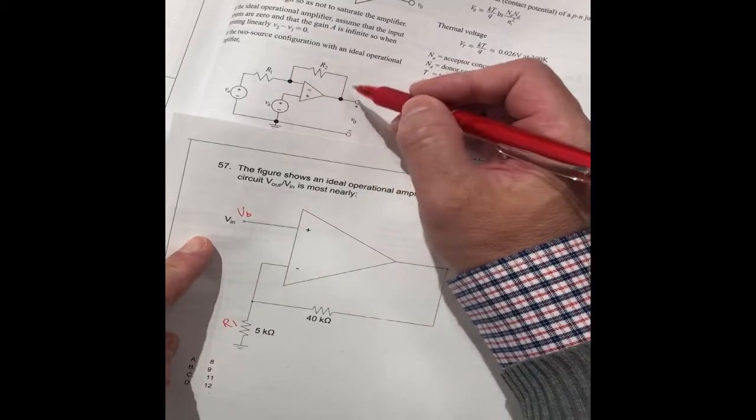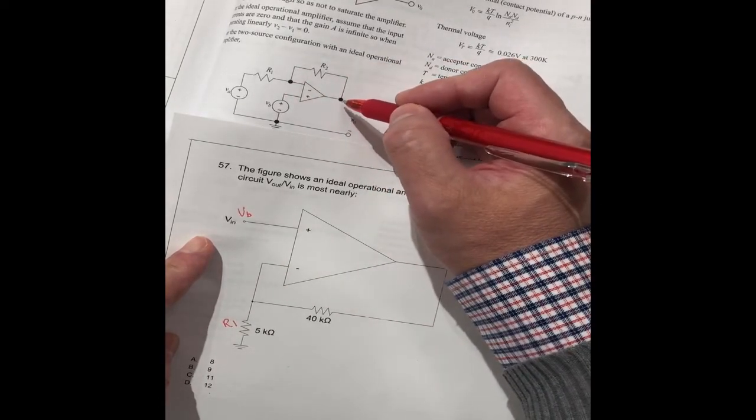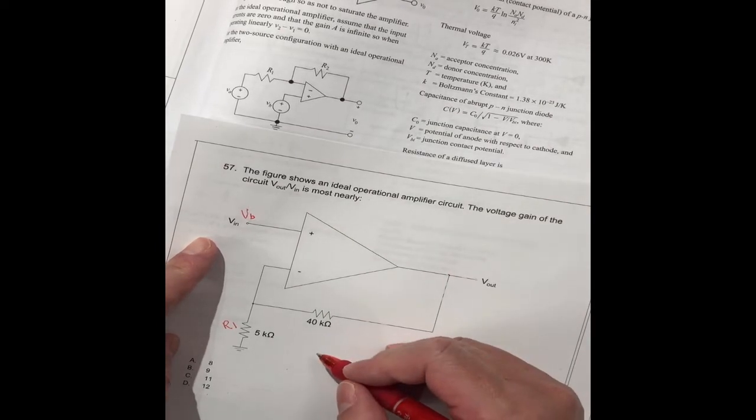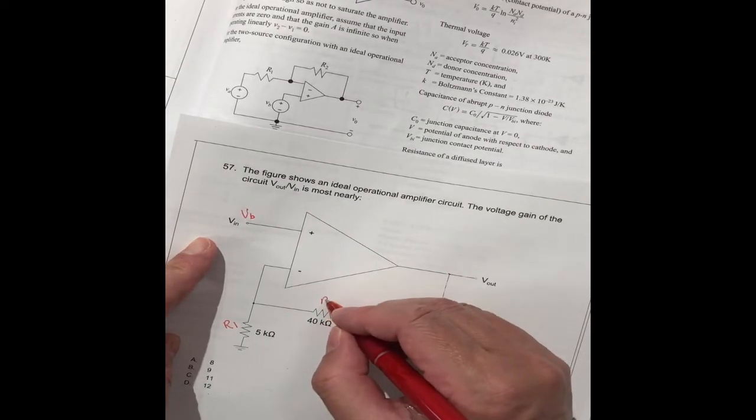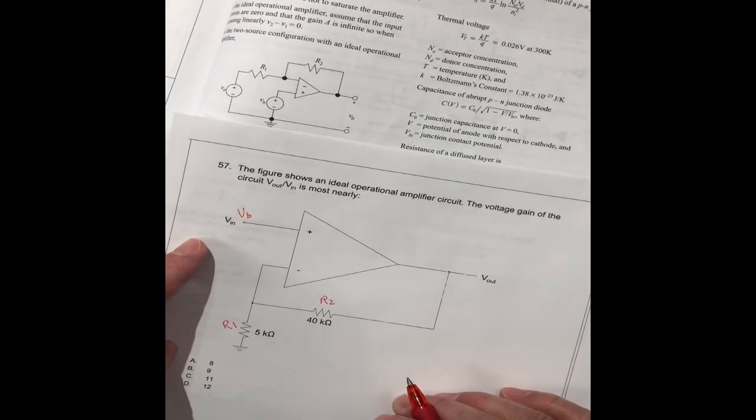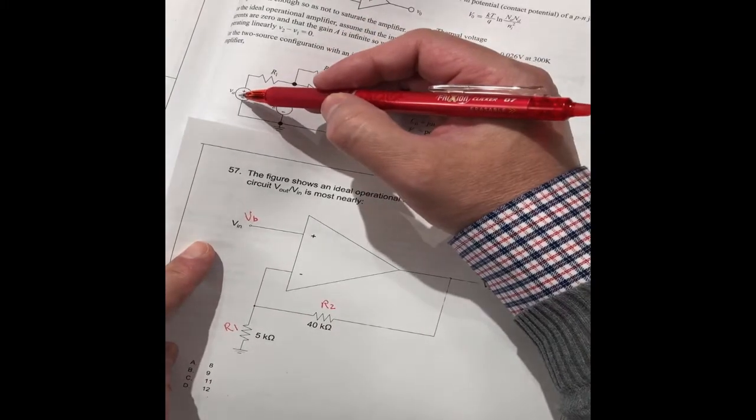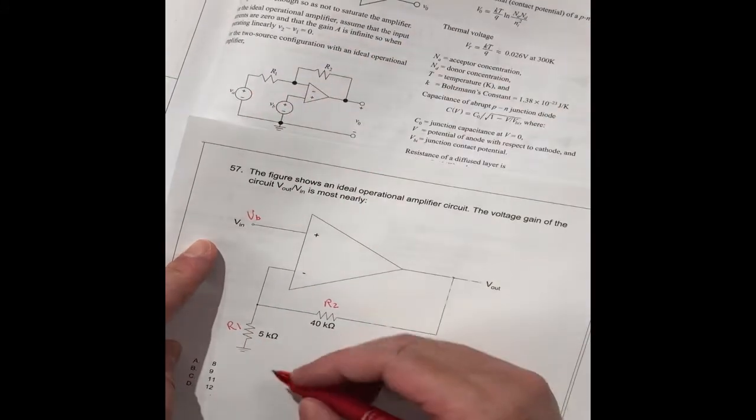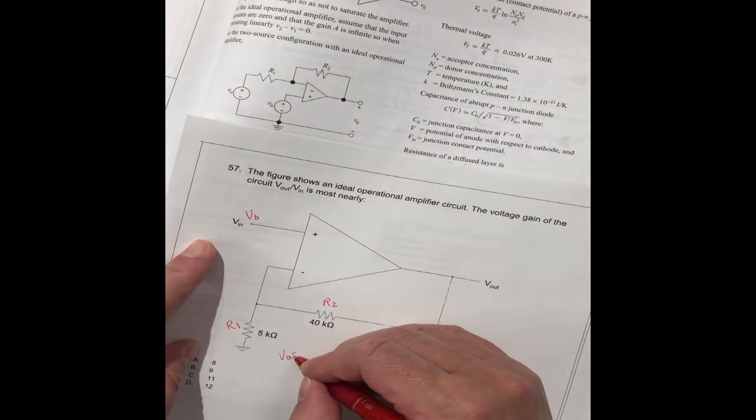And from this point to the output side, this point to the output side, this is R2. This is R2. And here VA, they have no VA. VA is equal to zero.